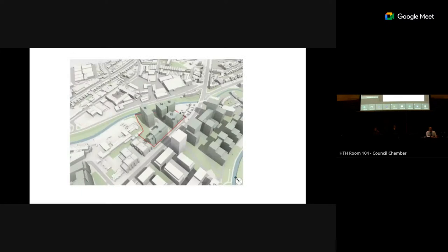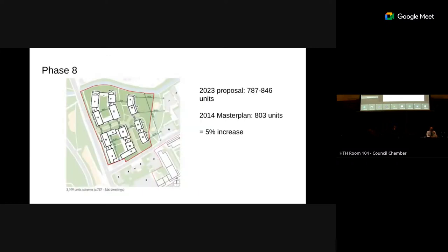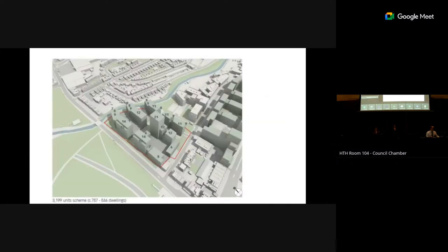That's a slight tweak — the building shows 16 stories, it's now 15 and 17. Phase eight proposes up to 846 units, a 5% increase on 2014, with an extension to Rowley Gardens — the existing open space to the east — and a central tower of 21 stories. A final image shows the proposed heights for phase eight.